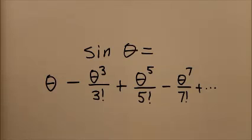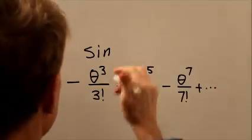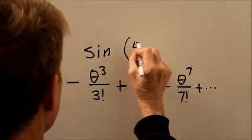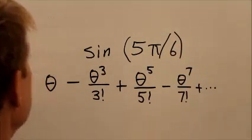We can approximate the sine of any angle theta by carrying this calculation out to a few terms. We are asked here about the sine of five pi over six, five pi over six radians.